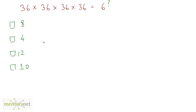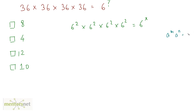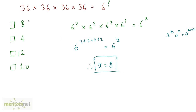Let us move on to the next question. You can write 36 as 6 squared. So, 6 squared times 6 squared times 6 squared times 6 squared times 6 squared equals 6 raised to x. Using the formula a raised to m times a raised to n equals a raised to m plus n, this is 6 raised to 2 plus 2 plus 2 plus 2 plus 2, which equals 6 raised to x. Therefore x is equal to 10. So we have the answer.